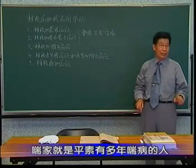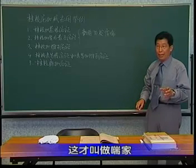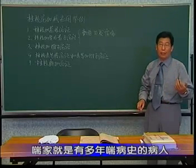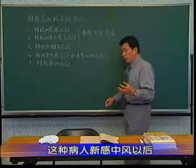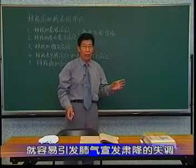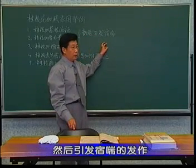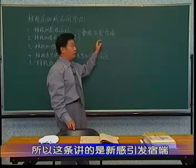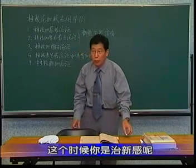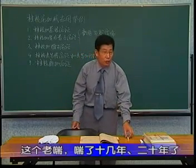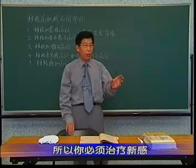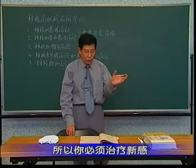喘家就是平素就有多年喘病的人，你看他哮喘都成专家了，所以才叫他喘家。这种病人新感中风以后，就容易引发肺气宣发肃降的失调，然后引发素喘的发作。所以这条讲的是新感引发素喘，这个时候你是治新感呢，还是治老喘呢？这个老喘他喘了十年二十年了，你能立竿见影有效吗？所以你必须治疗新感，治新感用桂枝汤。